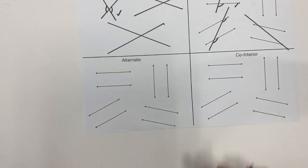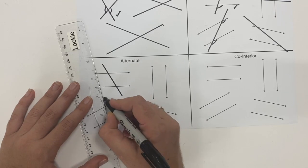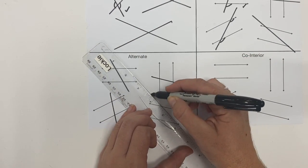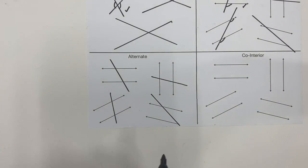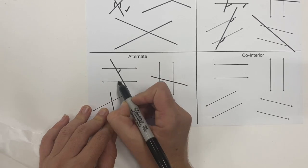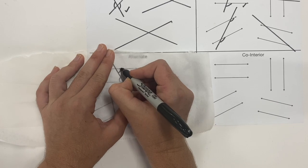For alternate angles, again you're going to draw some transversals. Then take our baking paper. Alternates are on either side, creating a Z. So I'm going to trace this angle.